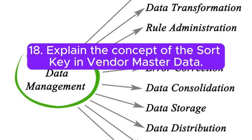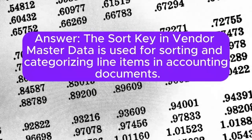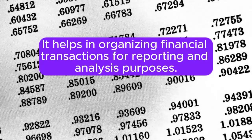18. Explain the concept of the sort key in Vendor Master Data. Answer: The sort key in Vendor Master Data is used for sorting and categorizing line items in accounting documents. It helps in organizing financial transactions for reporting and analysis purposes.